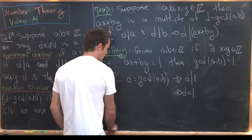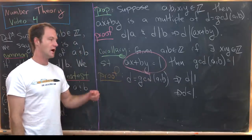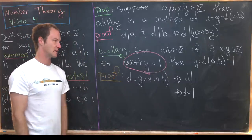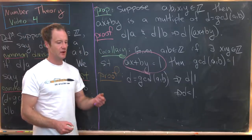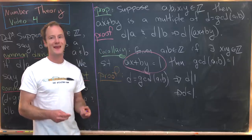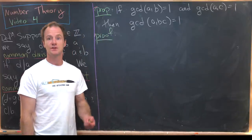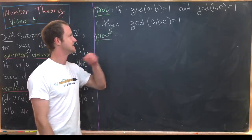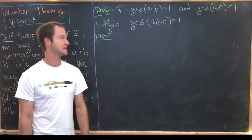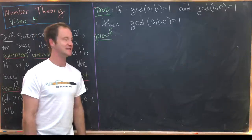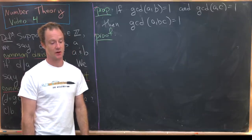So if it is possible to take a linear combination of two integers and get one, that means they are immediately relatively prime. One more proposition: if the GCD of a and b is one, and the GCD of a and c is one, then the GCD of a and bc is also one.